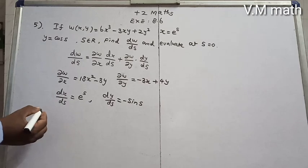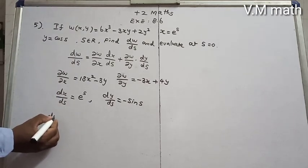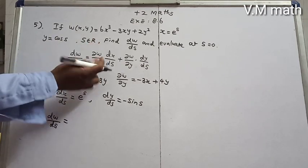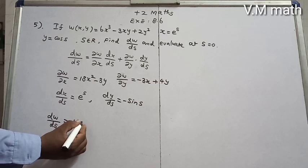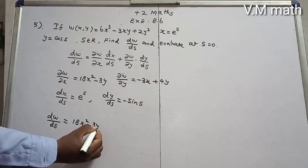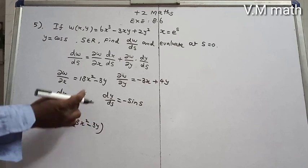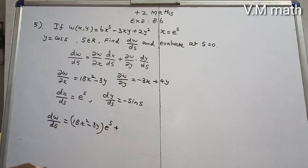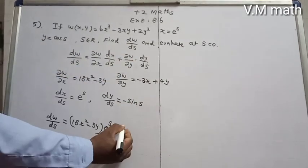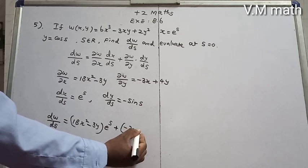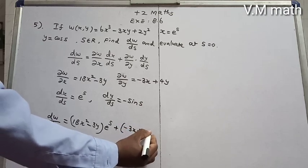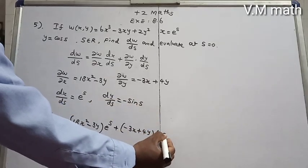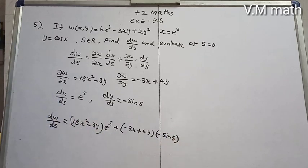Now substituting into the formula: dw/ds = (18x² - 3y)(e^s) + (-3x + 4y)(-sin(s)).